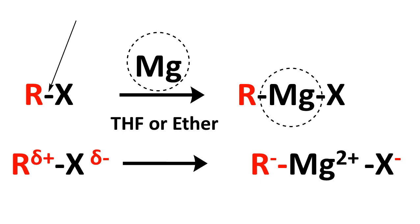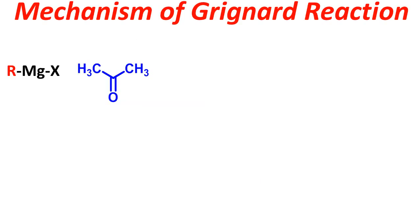If you carefully look, the R group charge is more negative than what it was in the alkyl halide — here magnesium bears the positive charge. So what you should remember is that the R group is an electron-rich group, and it will be able to attack other groups. Moving on to the mechanism of the Grignard reaction.